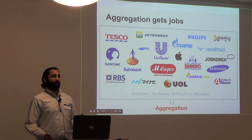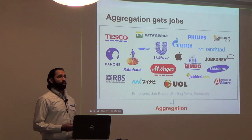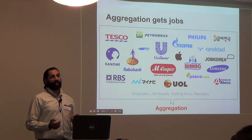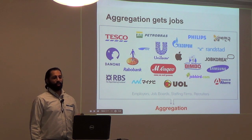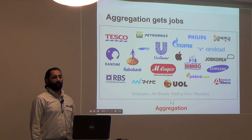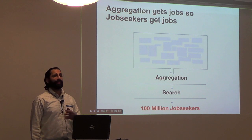Some jobs do come directly to us, but they are the exception. By and large, we need to go out and get jobs. Aggregation is the system that interacts with employer, recruiter, job board, and staffing agency sites to get jobs into our search index so we can deliver them to job seekers. We discover them, we extract them, and we pass them down.